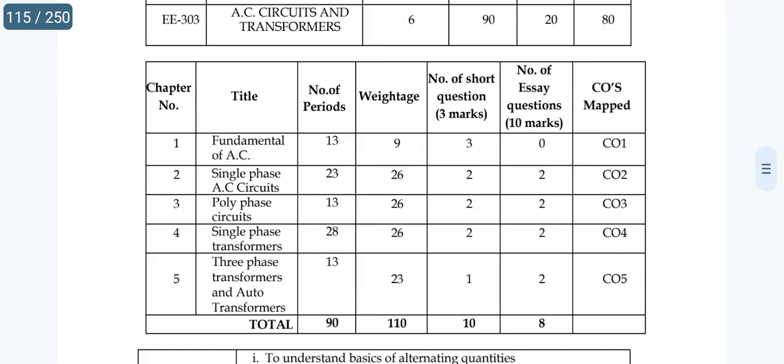In unit number 1, there is no SI question. The remaining units 2, 3, 4, and 5 have any units. Excluding unit 1, the remaining chapters have 10-mark SI questions. C20 is a little bit different in terms of question pattern.